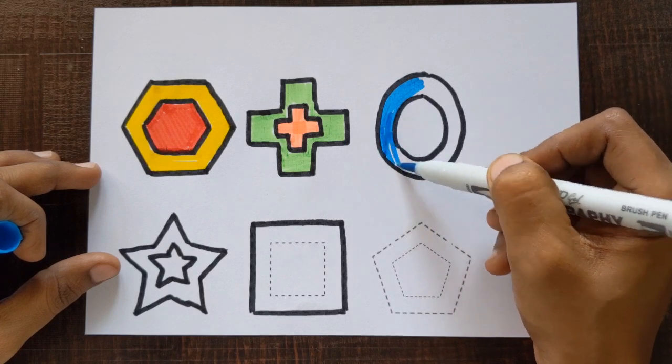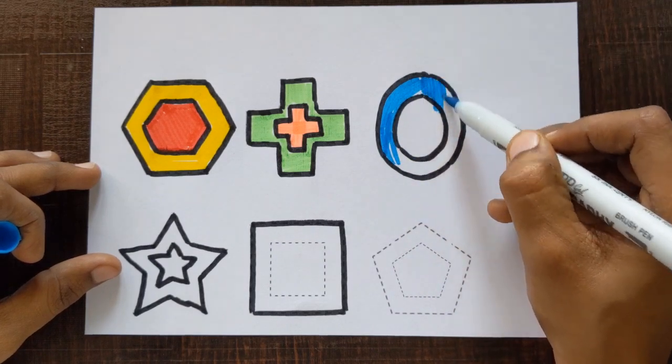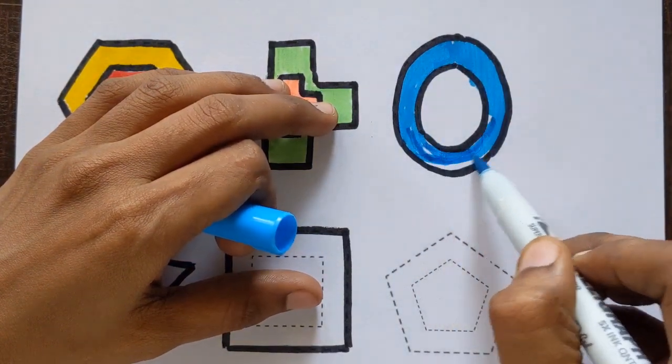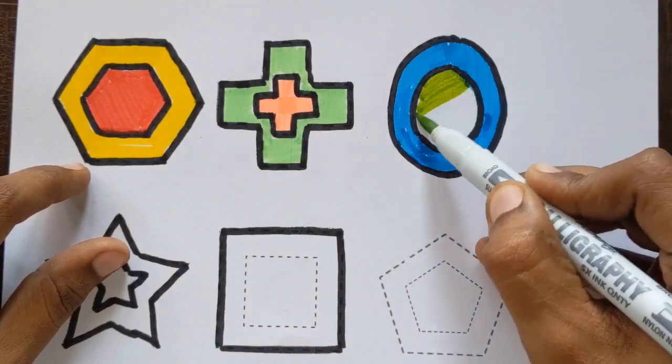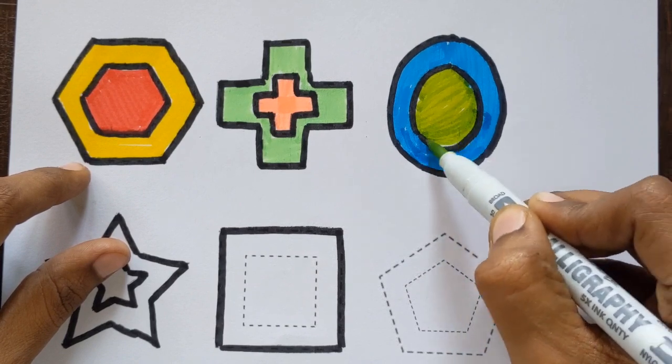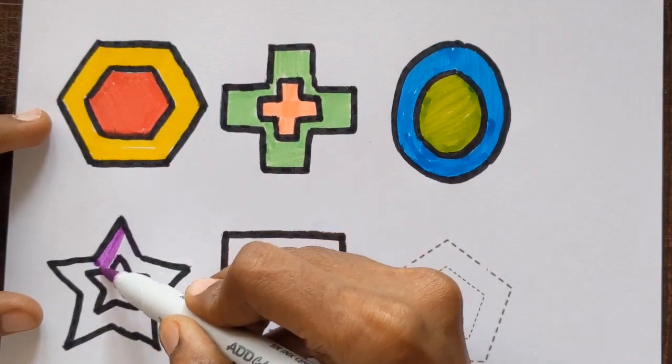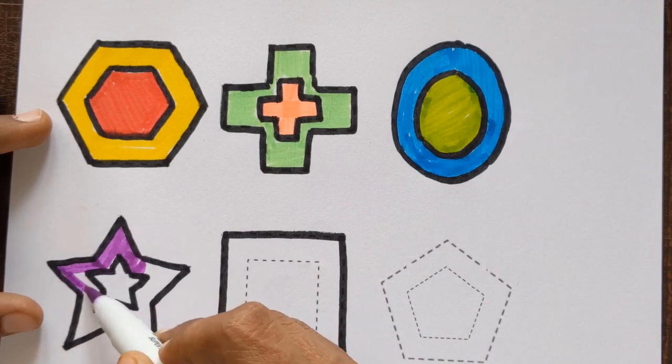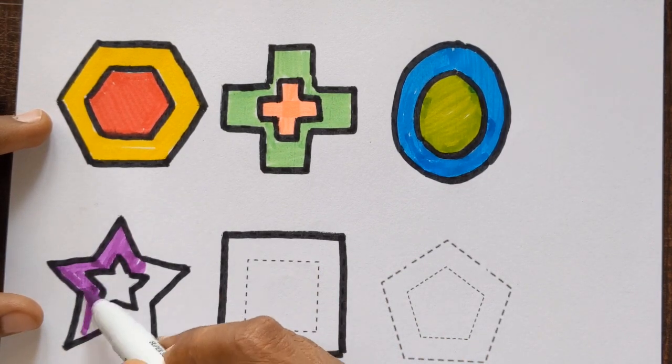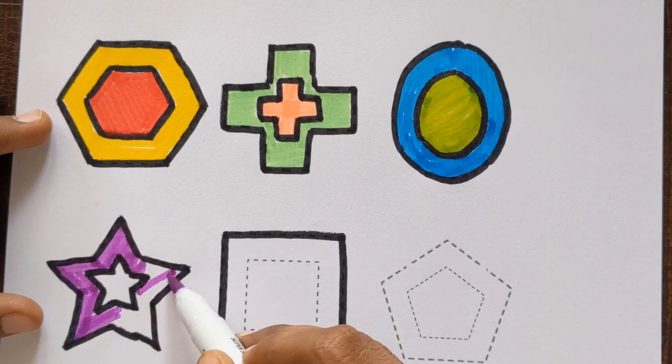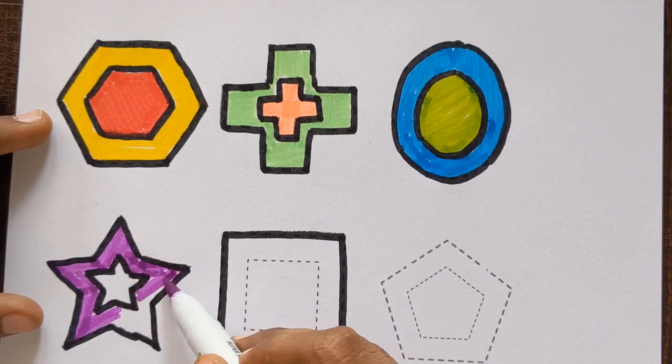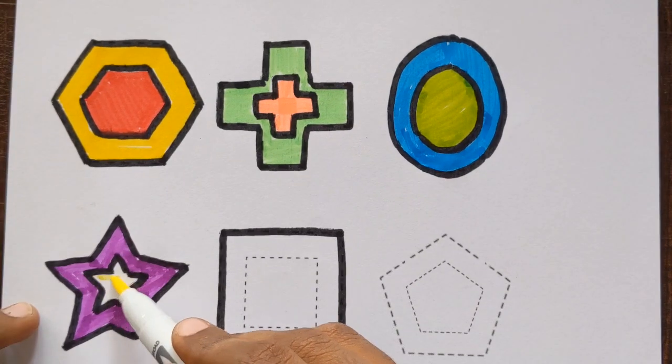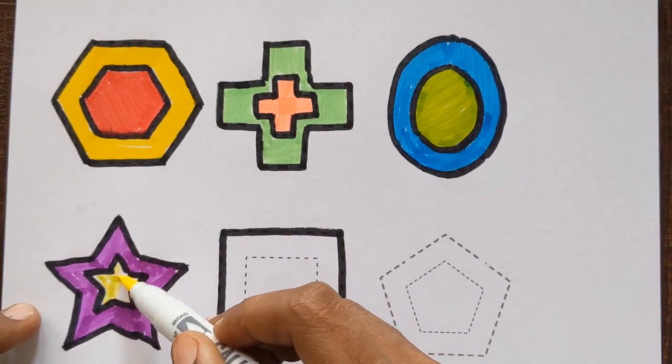Big oval sky blue color. Small oval green color. Big star purple color. Small star yellow color.